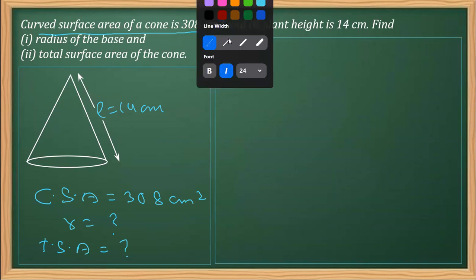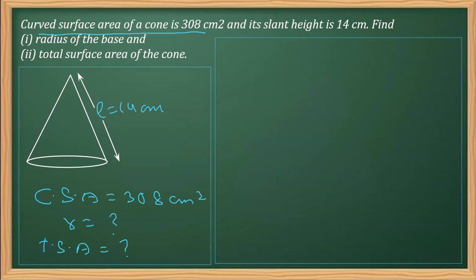We'll apply the formula for curved surface area: CSA = πRL, which is given as 308. We'll replace π with 22/7, radius is what we have to find, and the slant height is 14.